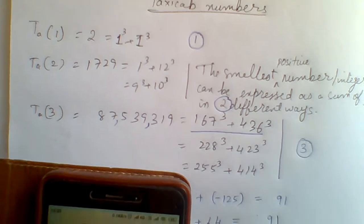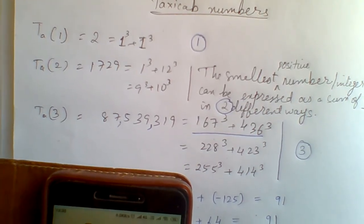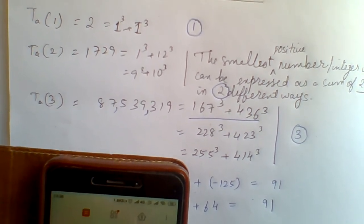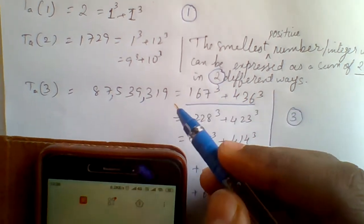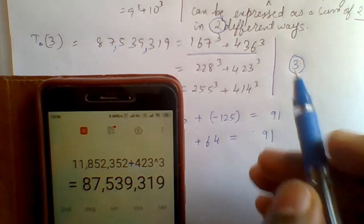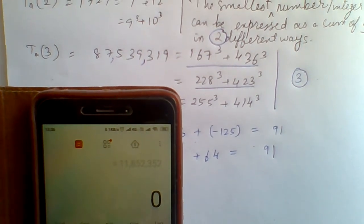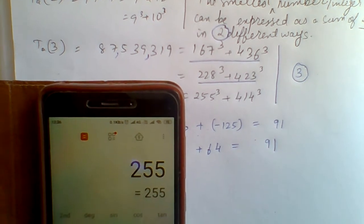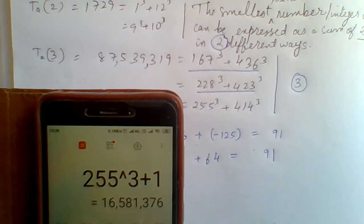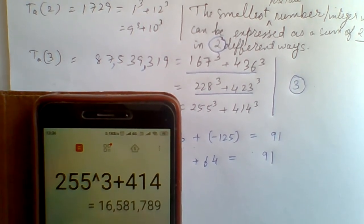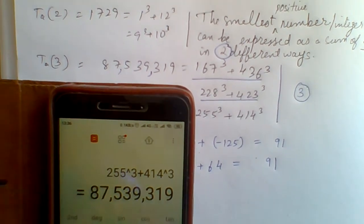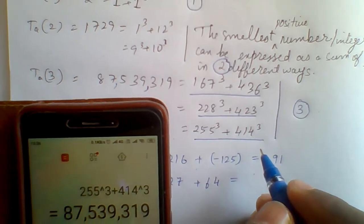When we go for the second one, 228³ + 423³, we still get the same result. Next going for the last one, 255³ + 414³, and still we get the same result. And you can verify this yourself.